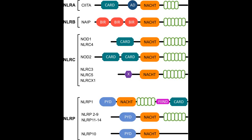There are three NLR subfamilies, the members of which use different effector domains to initiate signaling. The three effector domains are called CARD (Caspase Recruitment Domain), Pyrin Domain, and BIR Domain.